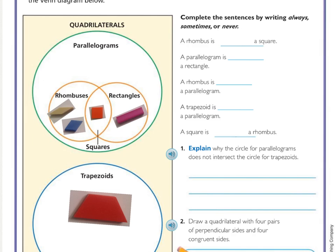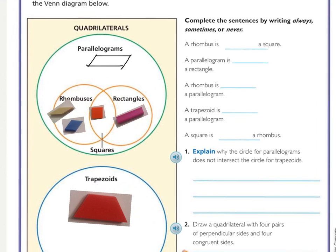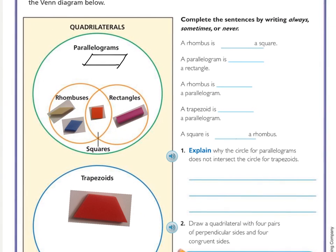A parallelogram would look something like a squished rectangle. And a quadrilateral would just be four sides — one, two, three, four — not necessarily parallel, just four sides with nothing special.